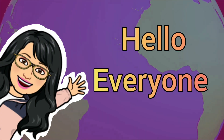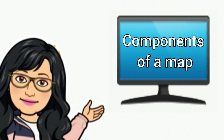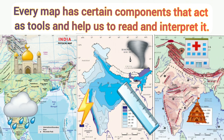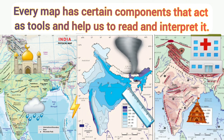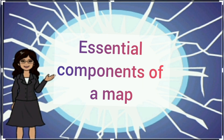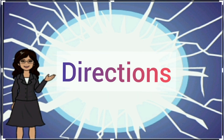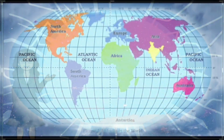Hello everyone. In this video you will study about important components of a map. Every map has certain components that act as tools and help us to read and interpret it. These are called essential components of a map. They are distance, directions, and symbols. Let us know about each component in detail.